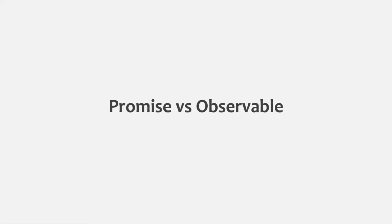In the very first lecture of this section we learned that we use Observable for handling asynchronous data, and we also learned that we can handle asynchronous data using Promises as well. In this lecture we are going to understand the difference between a Promise and an Observable, so that it will become clear when we should use each one. Let's go back to VS Code.